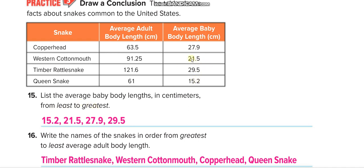Baby body lengths from least to greatest: 15.2, then 21.5, then 27.9, and then 29.5. For average adult body length from greatest to least: 121.6 cm for timber rattlesnake first, then 91.25 cm western cottonmouth, then 63.5 cm copperhead, and then 61 cm queen snake.